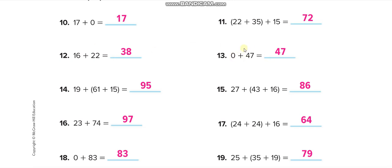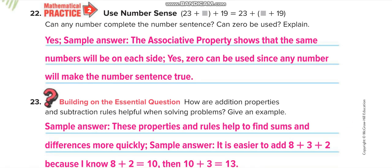16 plus 28, just two numbers, you can do it. 22 plus 16, commutative property. 0 plus 47, identity property. Groups - when you see the brackets it means directly the associative property.